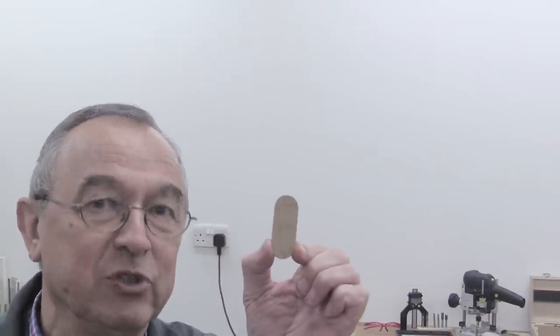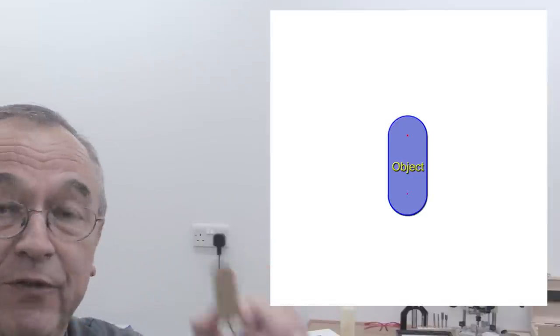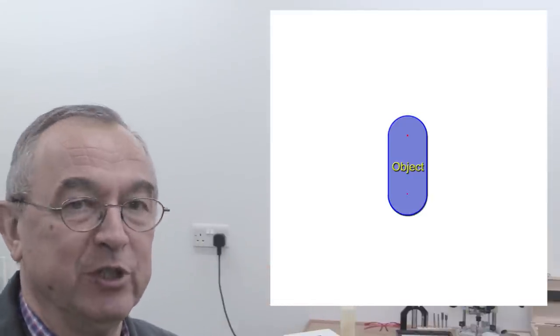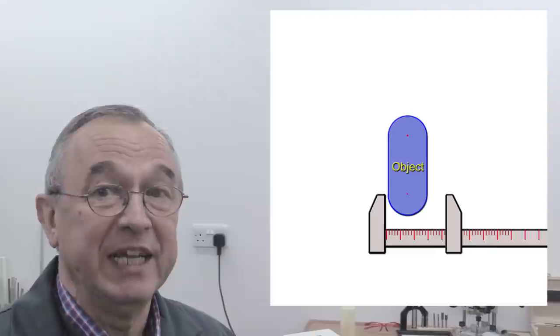Now, let me just explain the process that we go through when we want to copy an object, perhaps something that looks a little bit like this. The very first thing to do is to measure it. We need to know its length and its width.